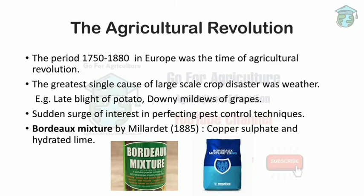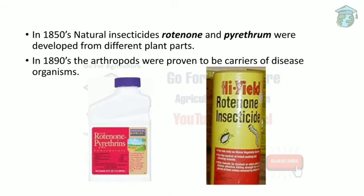The Agricultural Revolution from 1750 to 1880 in Europe saw weather as the main factor causing large-scale crop disasters, such as late blight of potato and downy mildew of grapes. This increased pest infestation rates, prompting Europeans to develop pest control techniques. In 1885, Millardet developed Bordeaux mixture, a combination of copper sulphate and hydrated lime. In the 1850s, natural insecticides like rotenone and pyrethrum were developed from plant parts. In the 1890s, earthworms were proven to be carriers of disease-causing organisms.